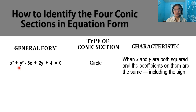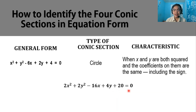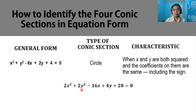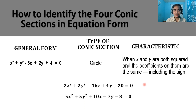For another example, 2x squared plus 2y squared minus 16x plus 4y plus 20 equals 0. Looking at our characteristic, x and y are both squared, and the coefficients are the same — both 2 — with the same sign. So this general form is a circle. Another equation where x squared and y squared both have coefficient 5 is also a circle.